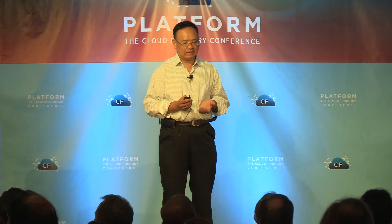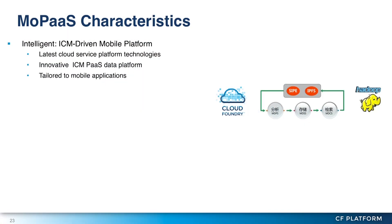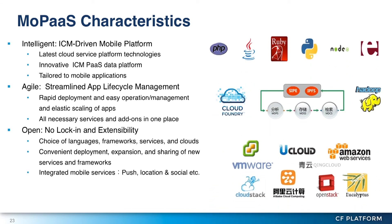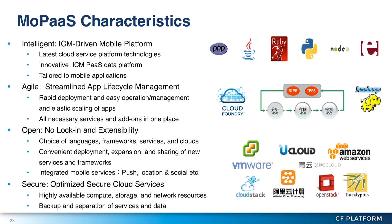In summary, what we have for the mobile PaaS platform includes a lot of data services built into our platform, and we've tailored this PaaS to mobile applications. We leverage Cloud Foundry's agility to streamline app lifecycle management. Because we are an open platform, there is no lock-in, and we have the extensibility to extend our services to meet user needs, with security at both the infrastructure level and the Cloud Foundry level.